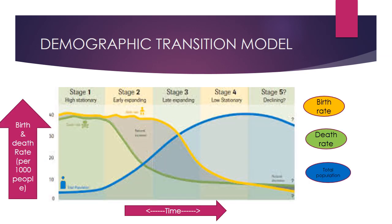The demographic transition model has Stage 1: High Stationary, Stage 2: Early Expanding, Stage 3: Late Expanding, Stage 4: Low Stationary, and Stage 5: Declining. This last stage is not used by all countries — only by some specific countries. In the diagram, there are three lines: yellow, green, and blue.